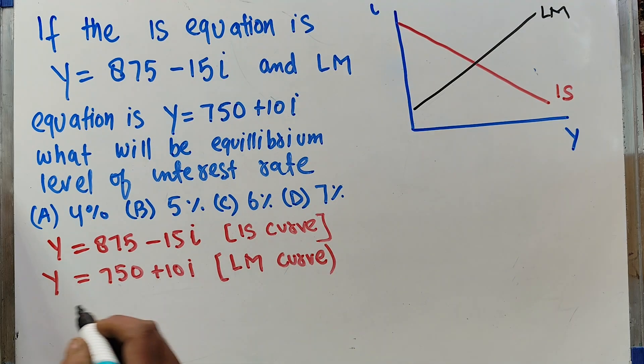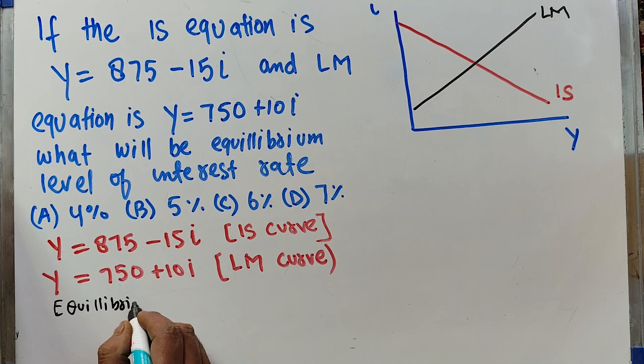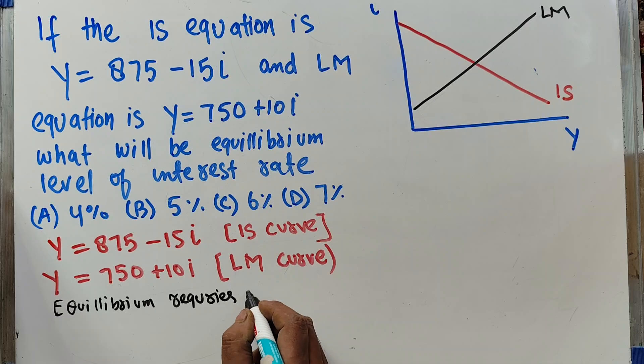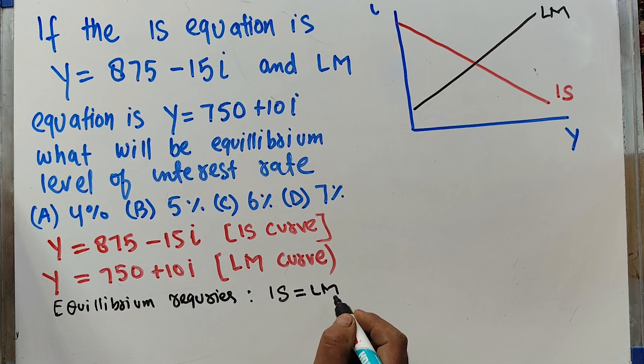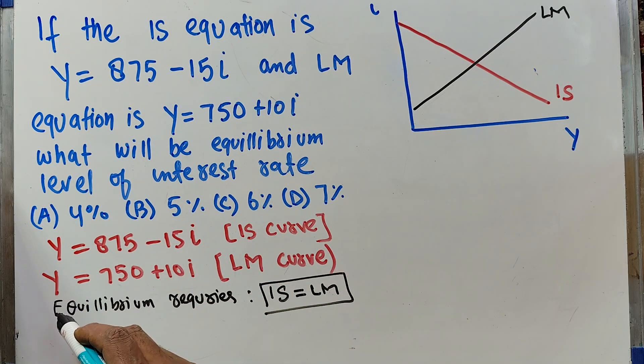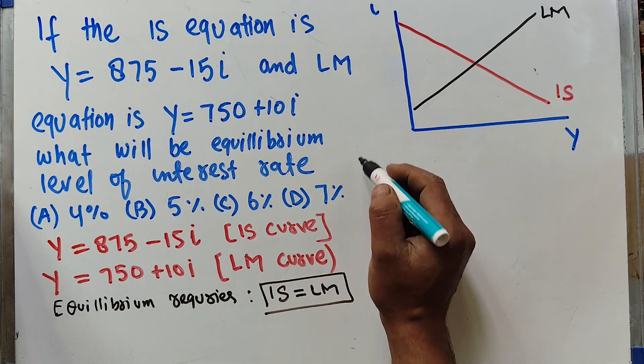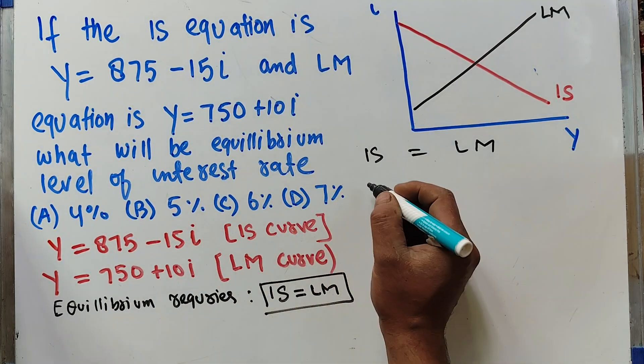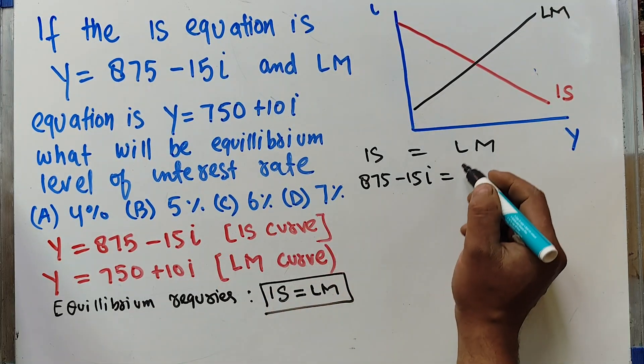Equilibrium requires that IS intersects LM, meaning IS = LM. Since the left-hand sides of both equations are the same, we equate the right-hand sides. IS = LM implies 875 - 15I = 750 + 10I.